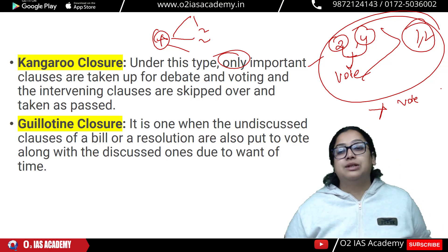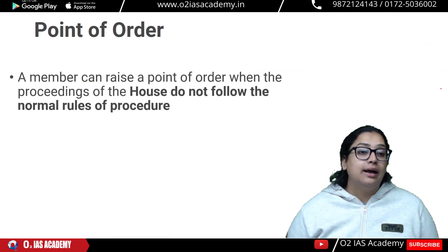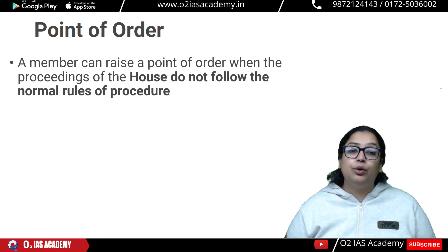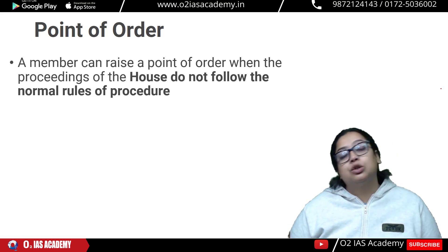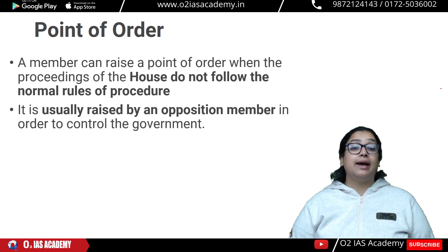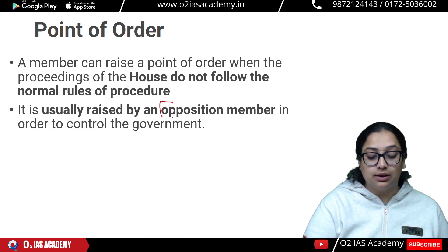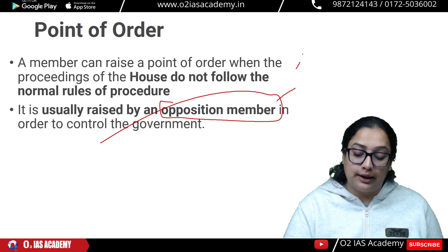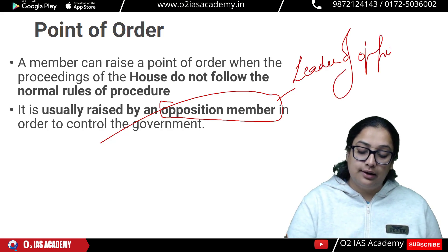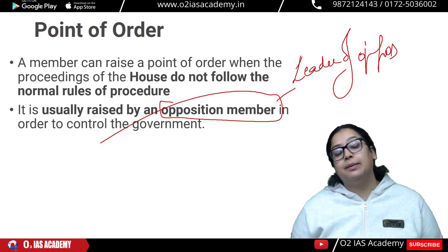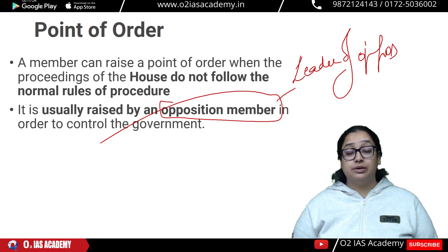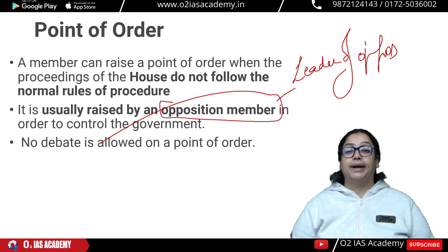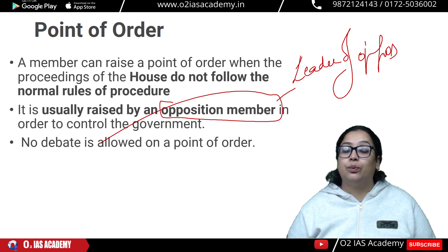So these are the 4 types of closures: Simple Closure, Closure by Compartments, Kangaroo Closure, and Guillotine Closure. Be very clear with these terms. Next is Point of Order. A member can raise a Point of Order when the proceedings of the house do not follow the normal rules of procedure. It is usually raised by an opposition member to control the government. No debate is allowed on a Point of Order — it is directly acted upon.